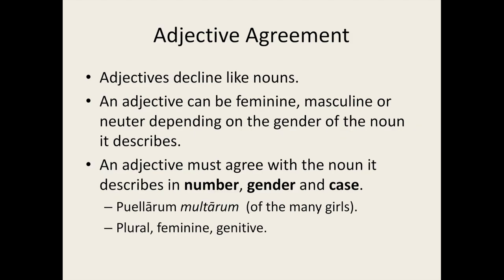Latin adjectives decline just like nouns. Latin adjectives must agree with the noun which they describe — this is called adjective agreement. This means that if an adjective modifies a masculine noun, we must use its masculine form. Similarly, if it describes a feminine noun, we must use its feminine form, and the same applies for neuter nouns. Furthermore, an adjective must agree with the noun it modifies in number and case also.